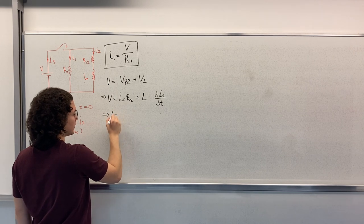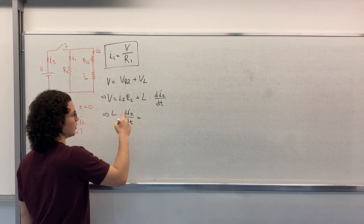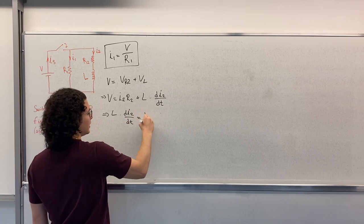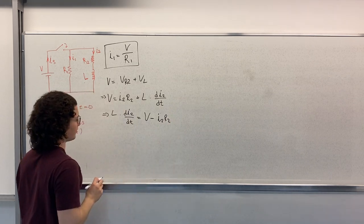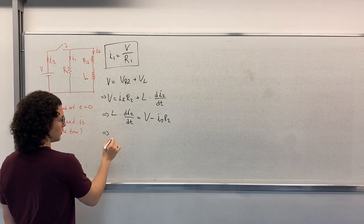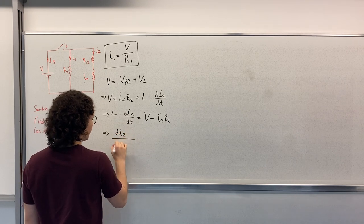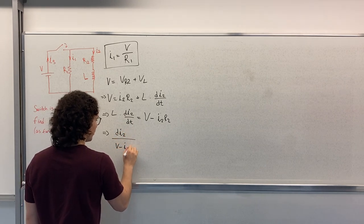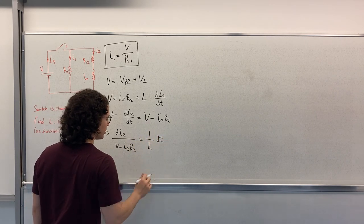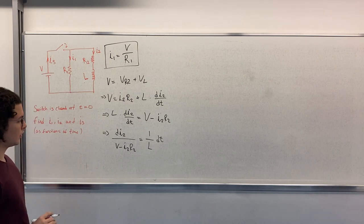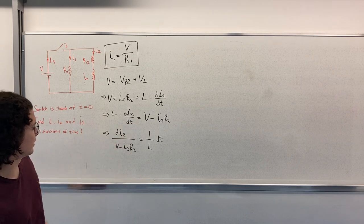L times D I2 DT is equal to V minus I2 R2. And D I2 over V minus I2 R2 is equal to 1 over L DT. Let me check. Yeah, this is correct.